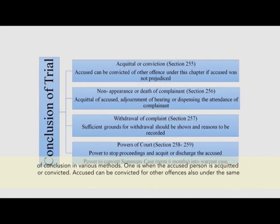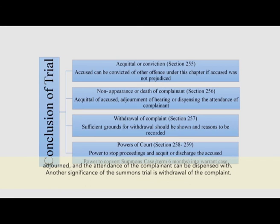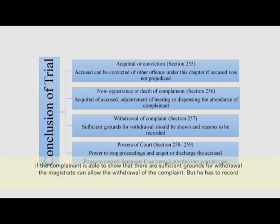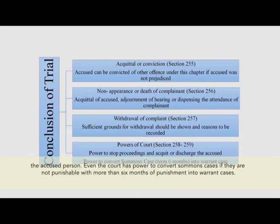Summons trials reach their conclusion in various ways. The accused can be acquitted or convicted — and the accused can also be convicted for other offenses under the same chapter, if he is not thereby prejudiced. In case of non-appearance or death of the complainant, the accused can be acquitted or the hearing can be adjourned and attendance of the complainant dispensed with. Another feature of the summons trial is withdrawal of the complaint — if the complainant shows sufficient grounds for withdrawal, the magistrate can allow it but has to record reasons. The court also has the power to stop proceedings and acquit or discharge the accused, and even to convert summons cases not punishable with more than six months into warrant cases.